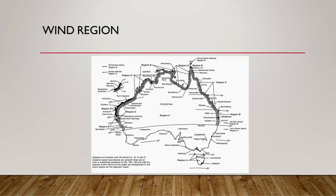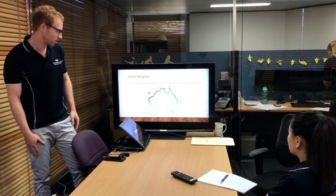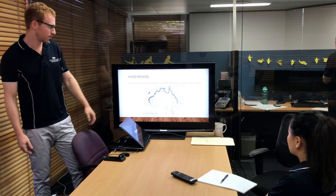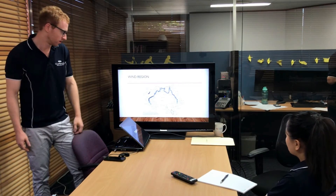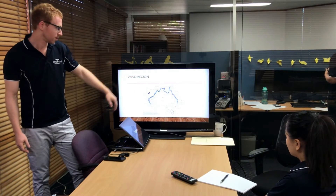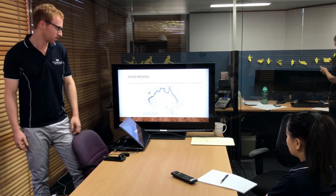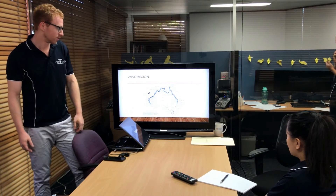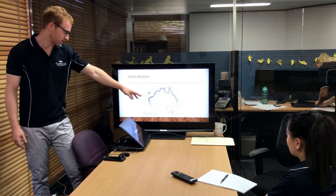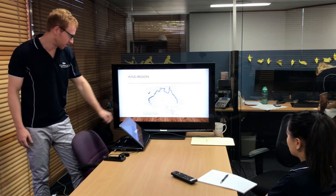So wind region — it's all based off this map, very easy, you just pick where you are on the site. Region A covers the majority of the area of Australia and probably the majority of the population as well — Sydney and Melbourne. Brisbane is the only capital city that's not in it. Region B is anywhere within 100 kilometers of the coast north of 30 degrees latitude. Region C is anywhere north of 25 degrees and within 50 kilometers of the coast. And then Region D, which we don't normally get into in Queensland, is over in Western Australia in this area here.